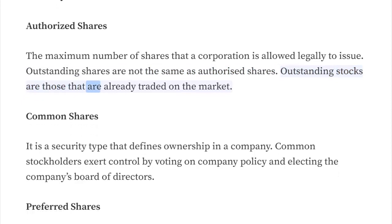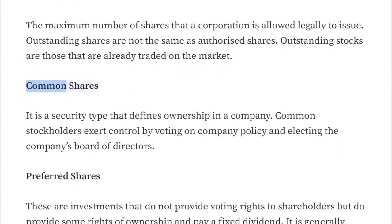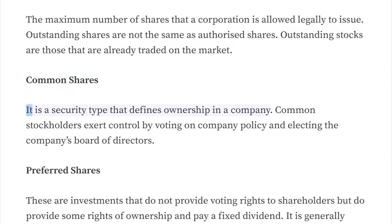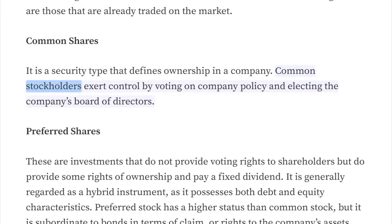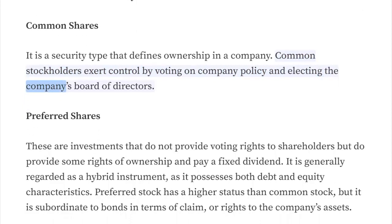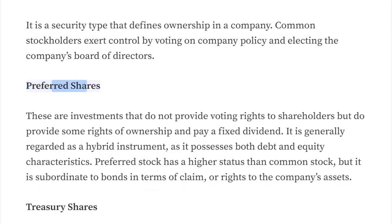Outstanding stocks are those that are already traded on the market. Common shares are a security type that defines ownership in a company. Common stockholders exert control by voting on company policy and electing the company's board of directors.